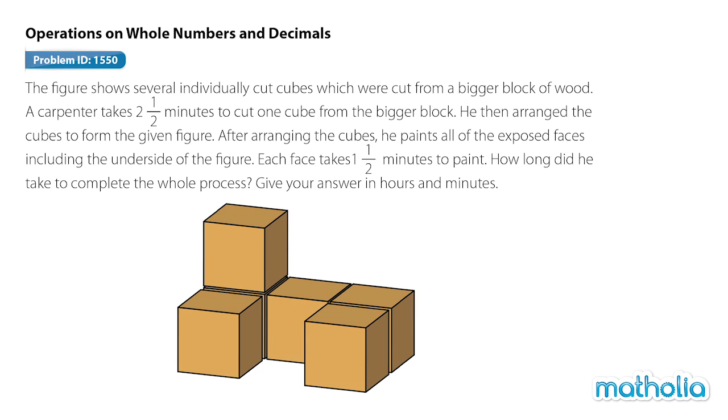The figure shows several individually cut cubes which were cut from a bigger block of wood. A carpenter takes two and a half minutes to cut one cube from the bigger block. He then arranged the cubes to form the given figure. After arranging the cubes, he paints all of the exposed faces, including the underside of the figure. Each face takes one and a half minutes to paint. How long did he take to complete the whole process? Give your answer in hours and minutes.